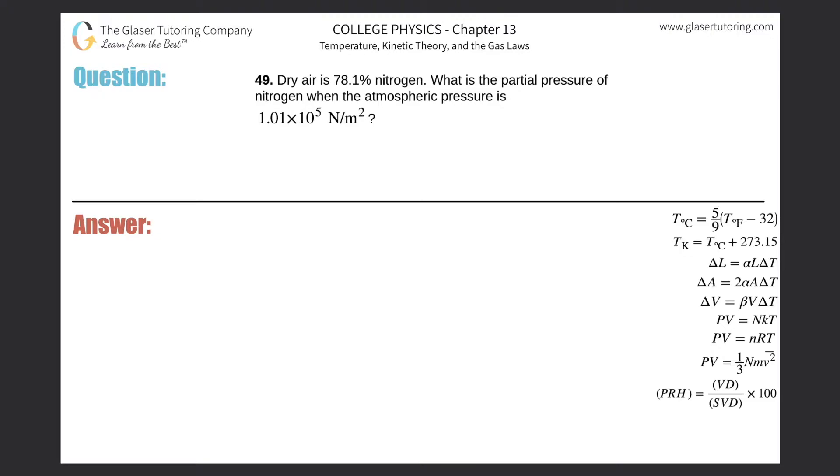Number 49. Dry air is 78.1% nitrogen. What is the partial pressure of nitrogen when the atmospheric pressure is 1.01 times 10 to the 5 newtons per meter square?